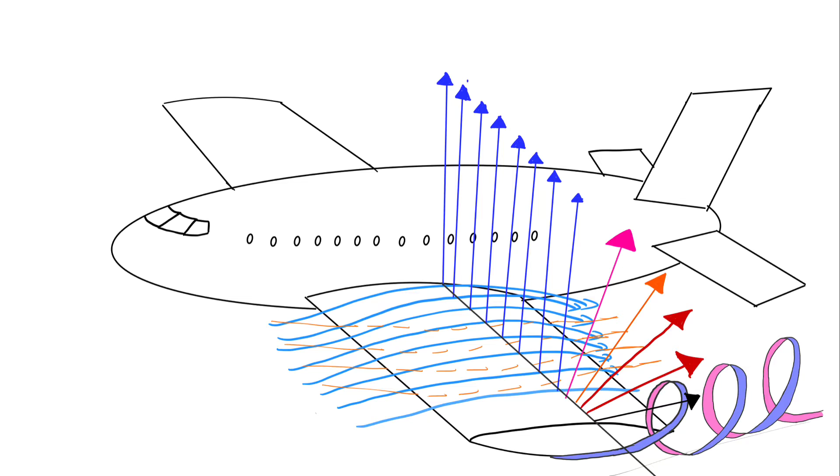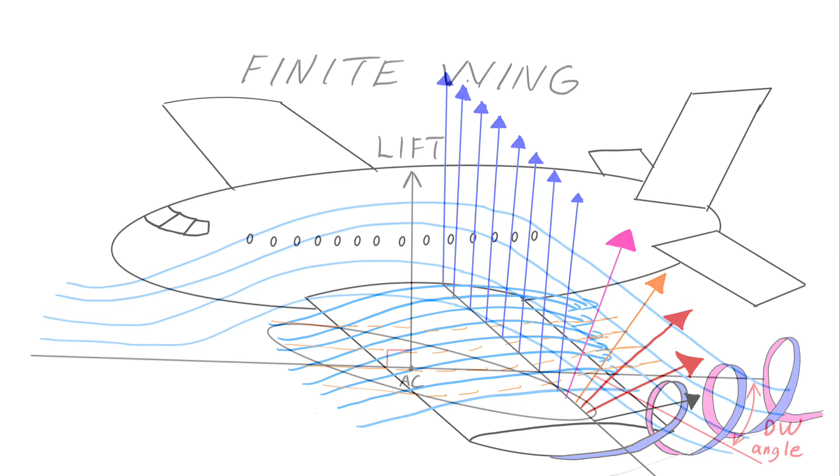Induced drag is not some sort of friction that the airplane is feeling as it's flying through the air. The lift vector itself is the drag. It is actually being pulled backwards.